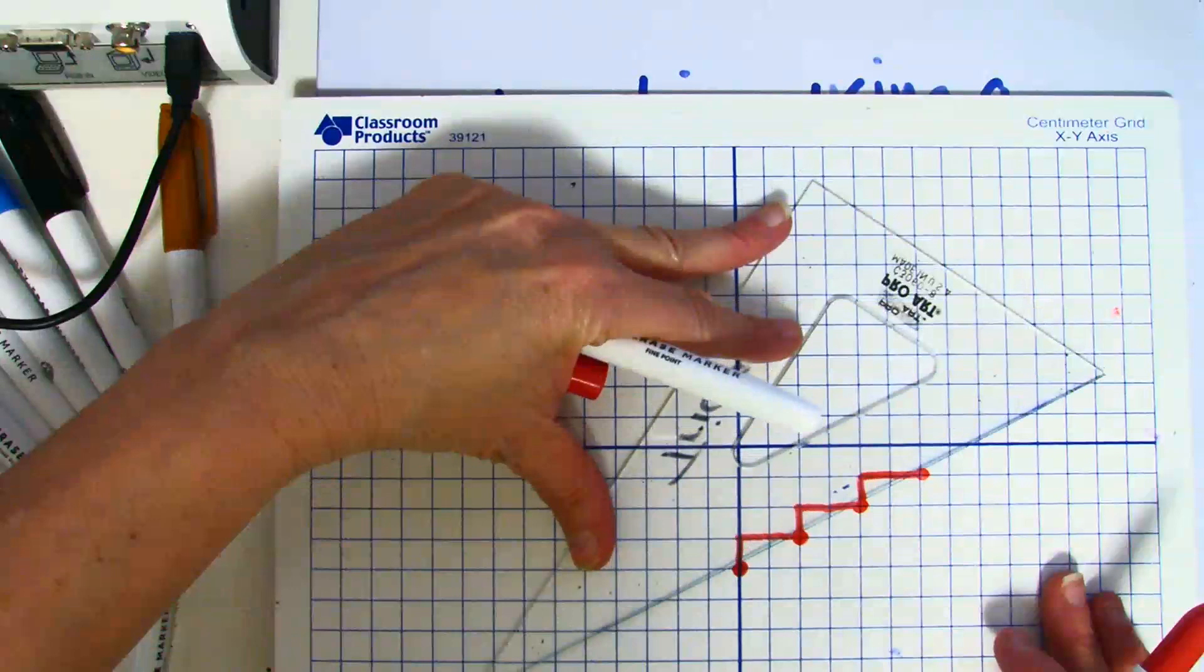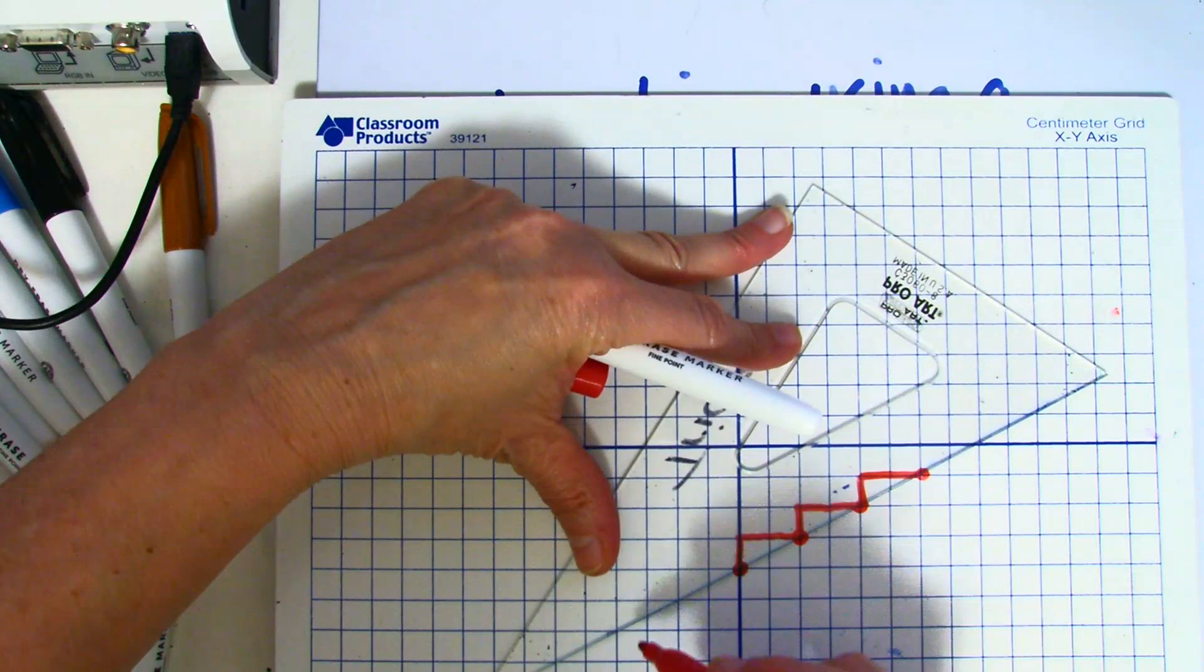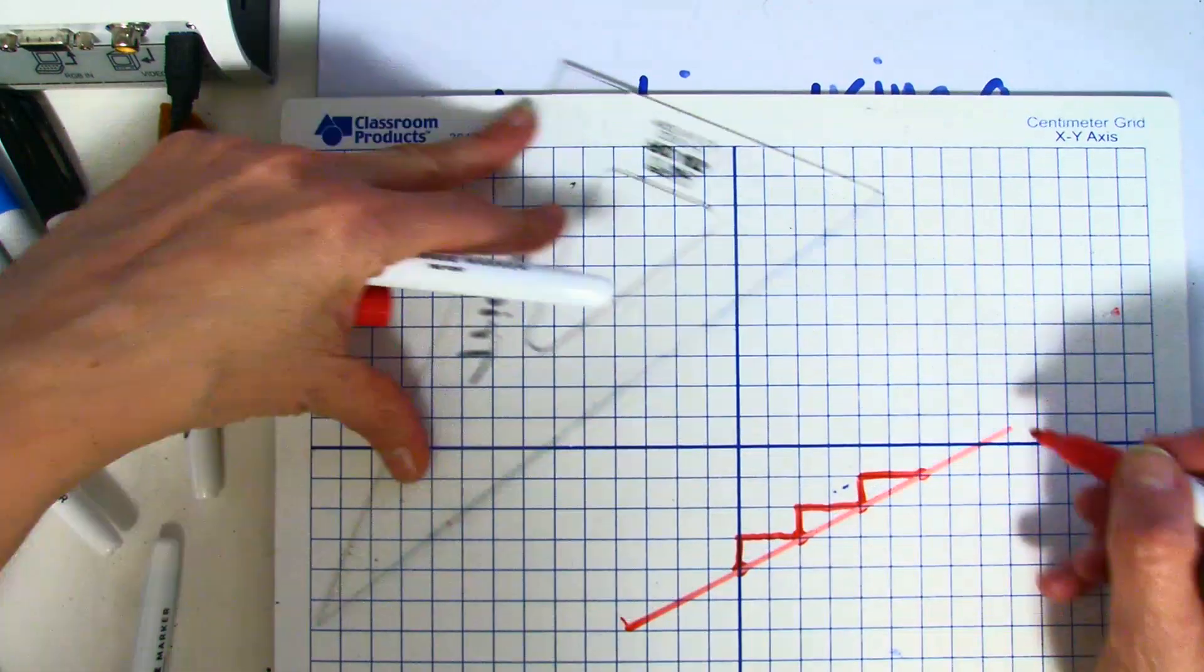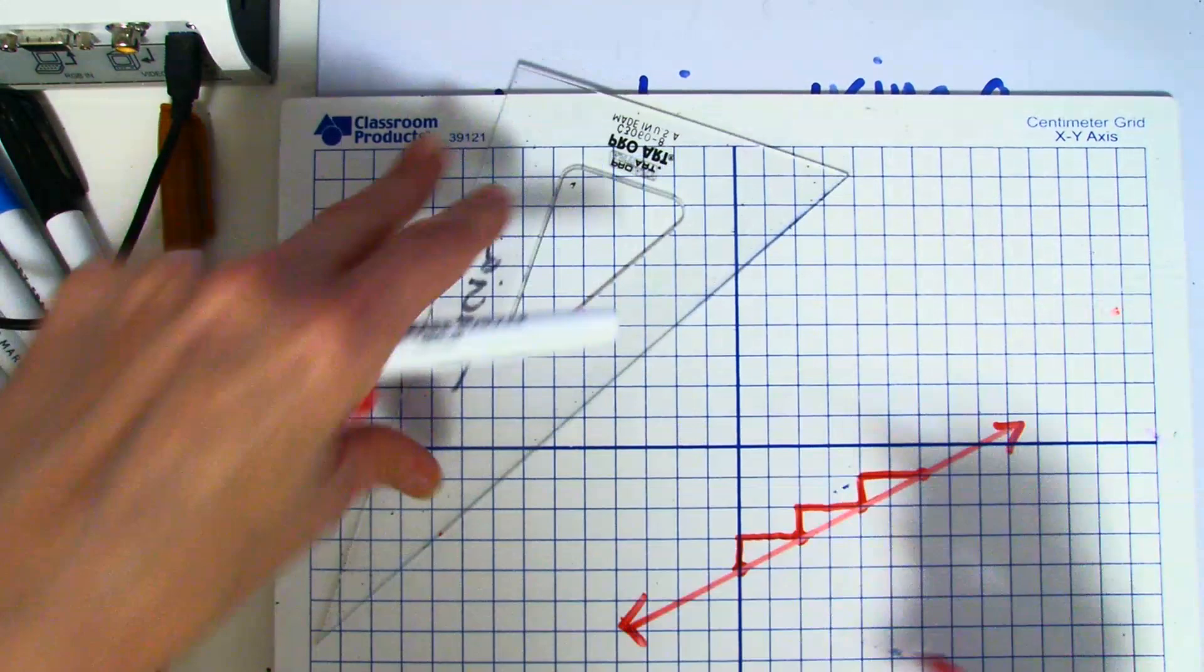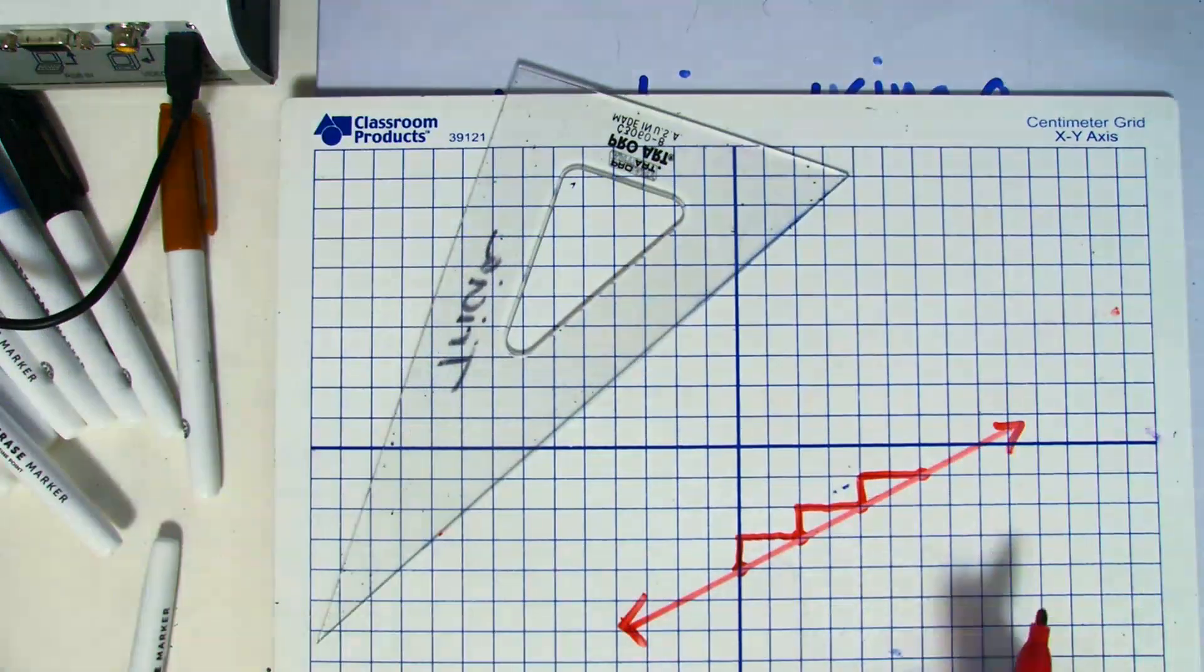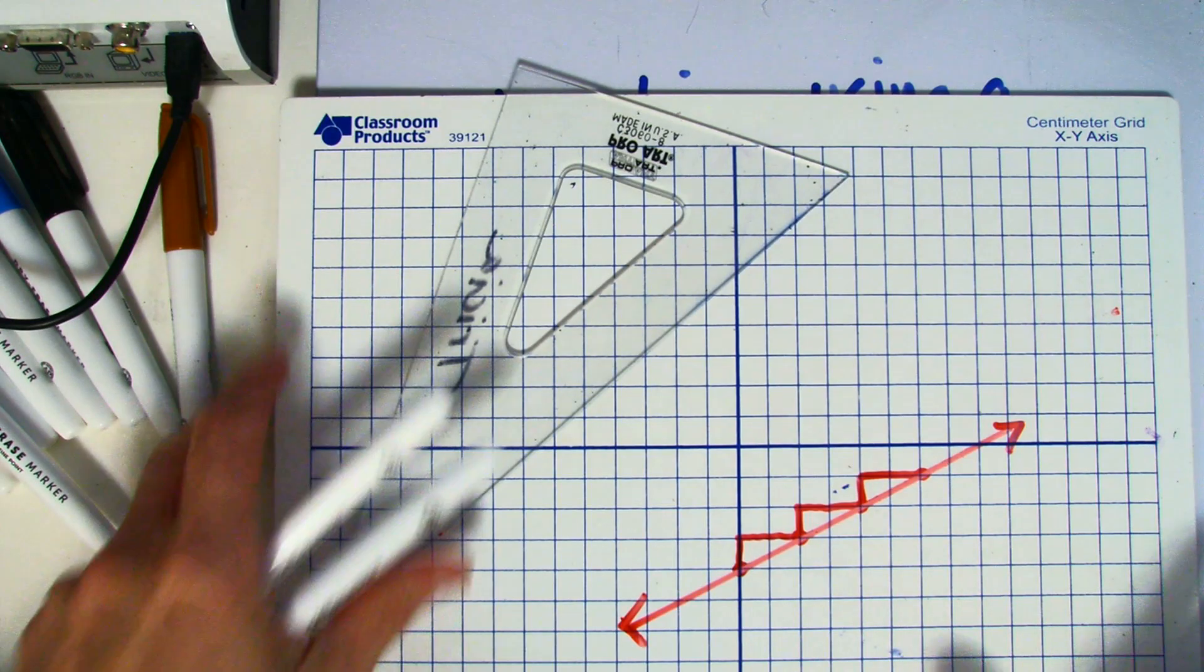So if I connect, you can see that this line is increasing, or it is a positive line. Let's go ahead and do another example.